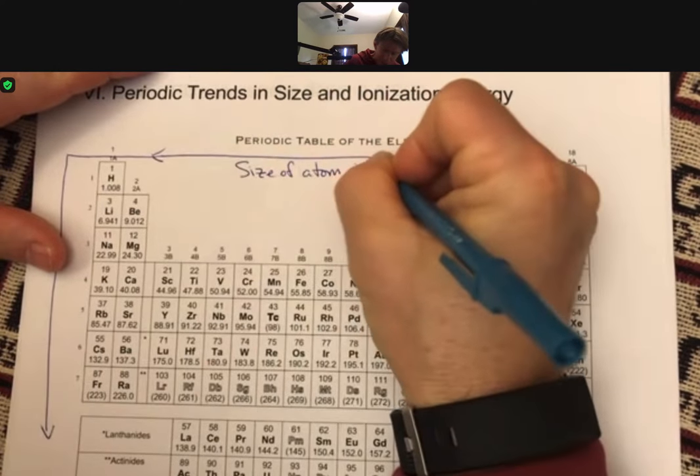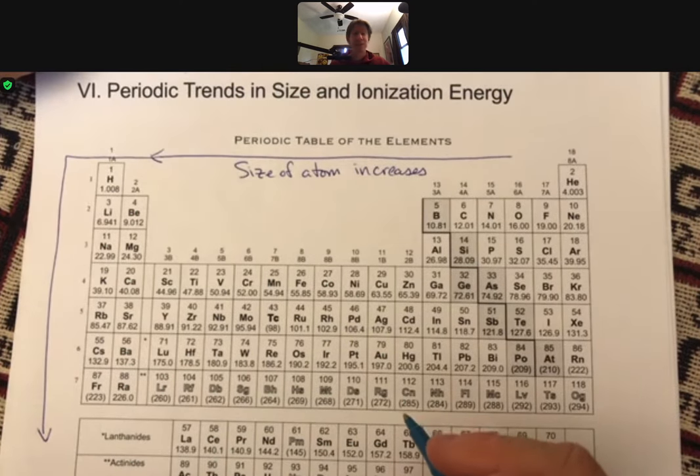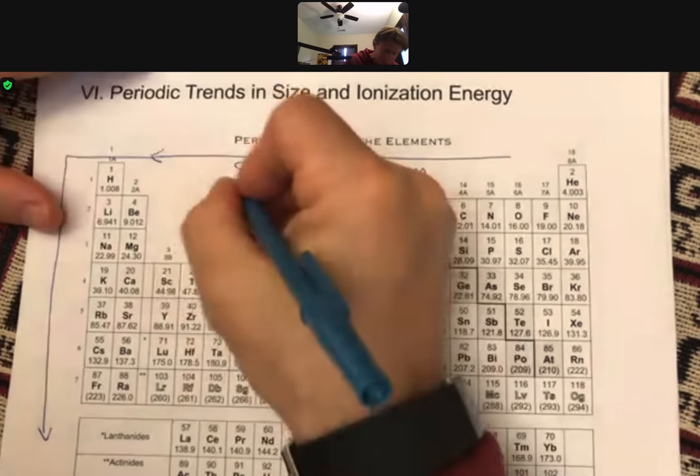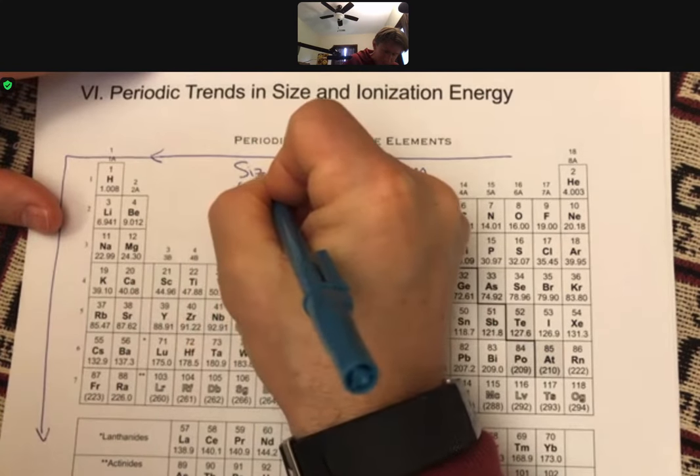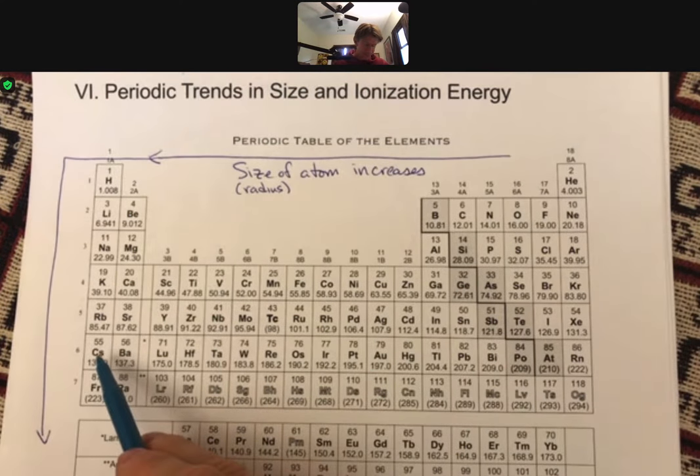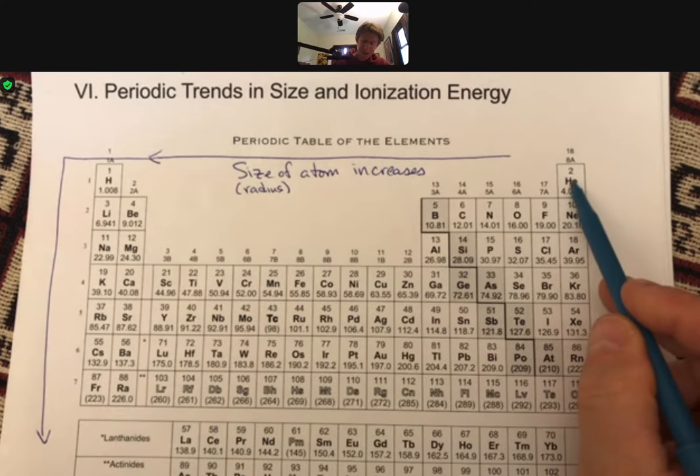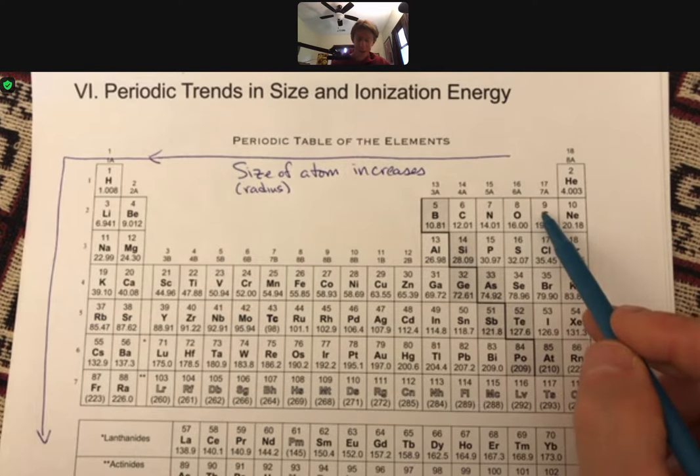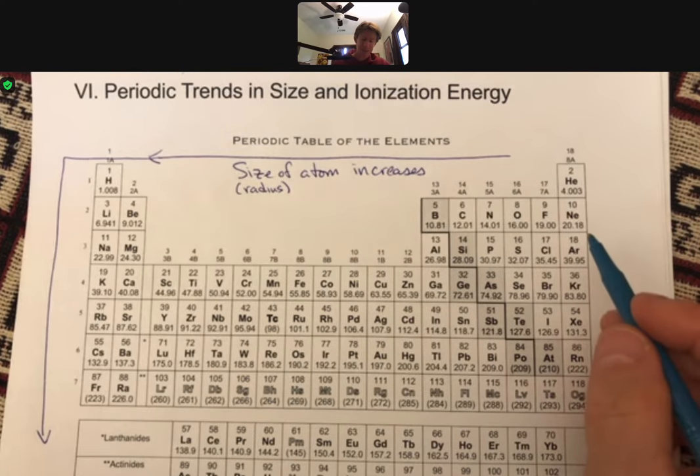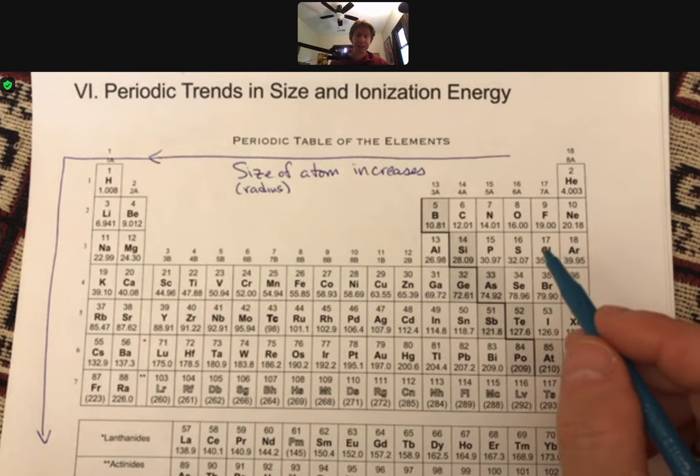Size of atom increases, and sometimes we say size of atom and sometimes we say radius, but those are the same thing for us. So cesium is one of the biggest atoms on the periodic table, and fluorine and helium, but I tend to just talk about fluorine because helium is up there by itself. Fluorine is one of the smallest atoms on the periodic table, and that's one of our periodic trends.